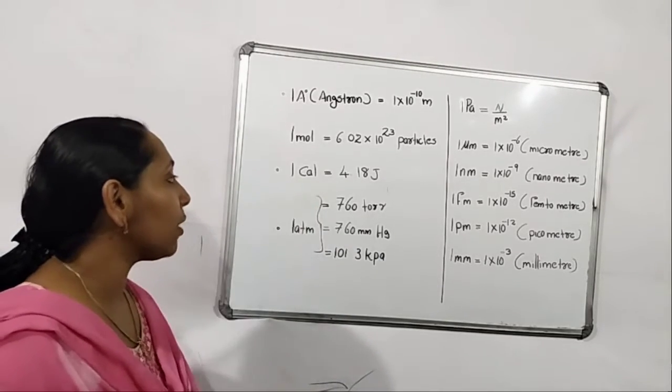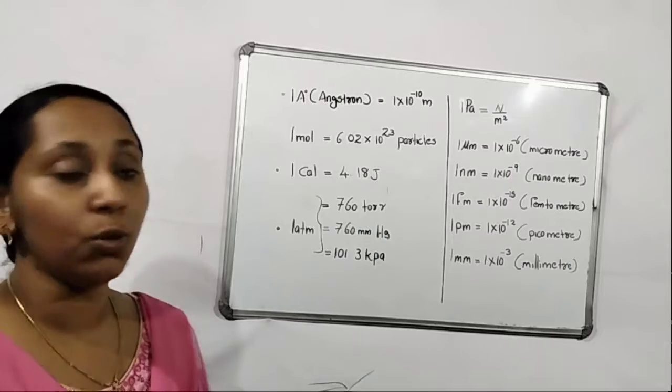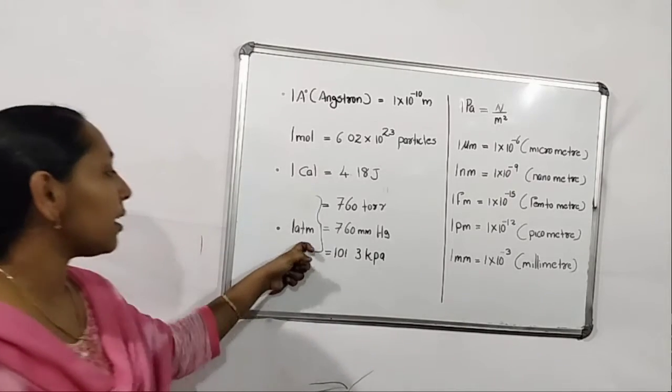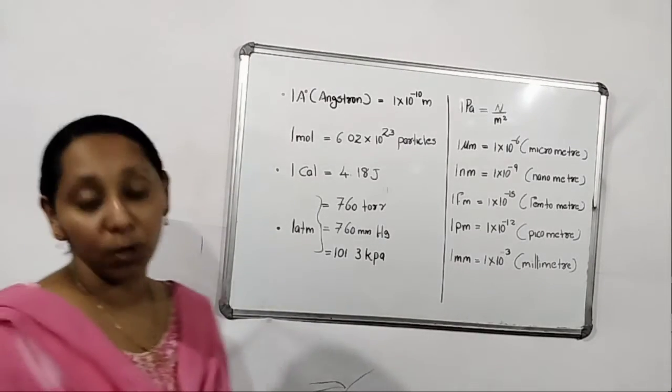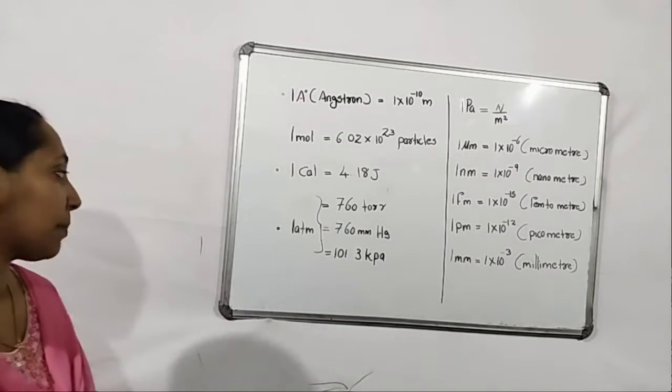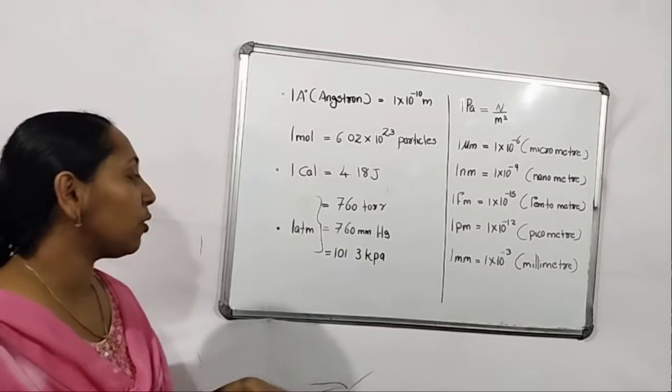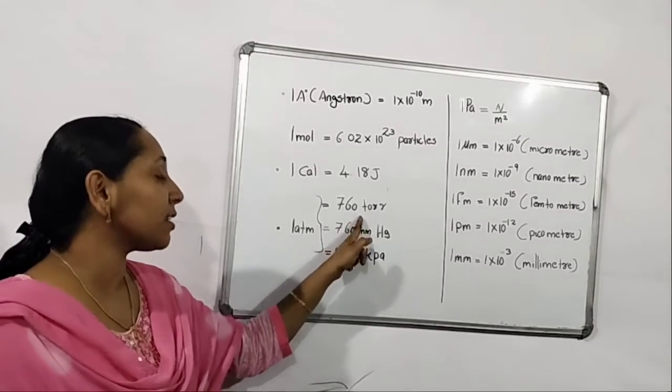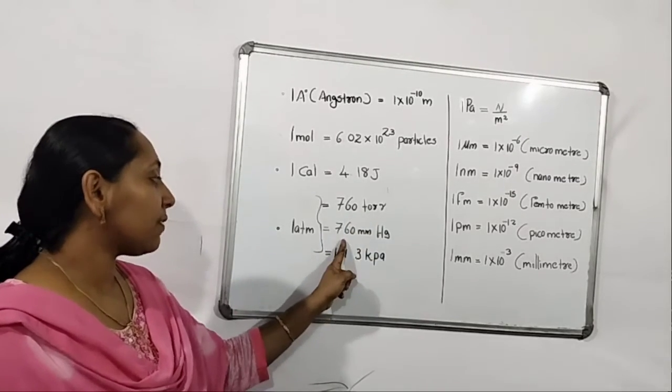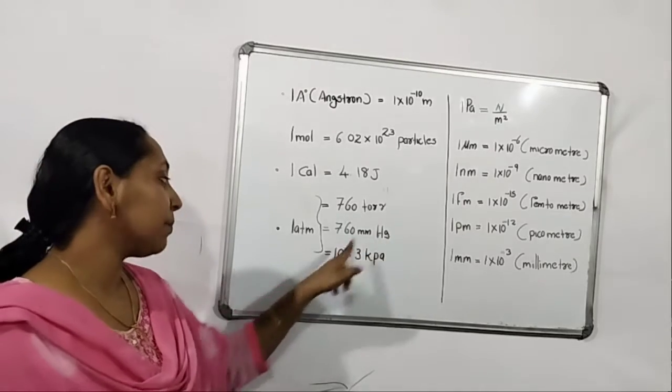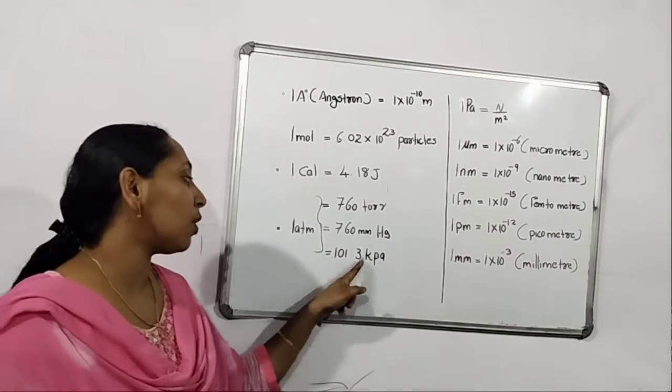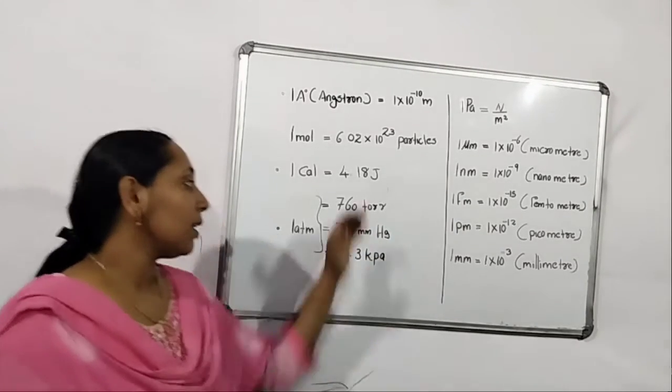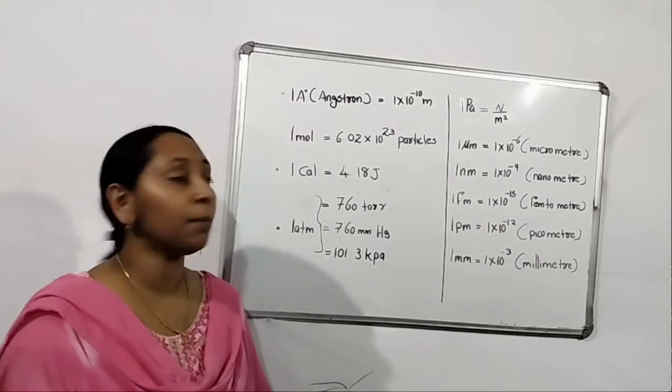Next one, 1 calorie equal to 4.18 joules. Next one, this is the unit used to measure atmospheric pressure, ATM. One atmospheric pressure equal to 760 mm of mercury, otherwise 101.3 kilopascal. The three units represented by one atmospheric pressure.